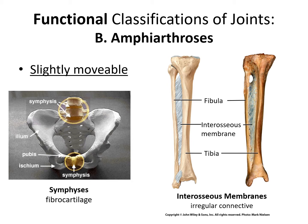A good example would be a symphysis — a connection between two bones made out of fibrocartilage. It allows for some movement but the movement is quite limited. We have the pubic symphysis between the pubis bones of the hip, which allows the hip to flex slightly. Incidentally, that joint becomes far more flexible during childbirth to allow the hips to expand. We also have the connections between the vertebrae known as intervertebral discs; there's not a lot of movement at each disc, but several of them stretching or compressing allows for flexion of the spine.